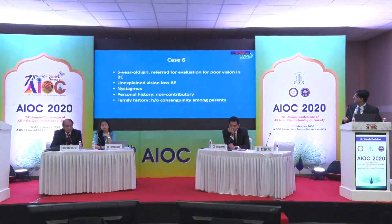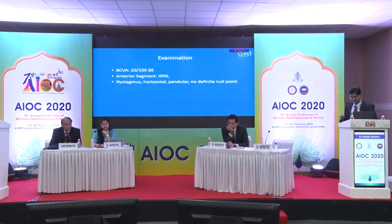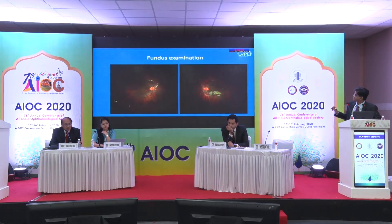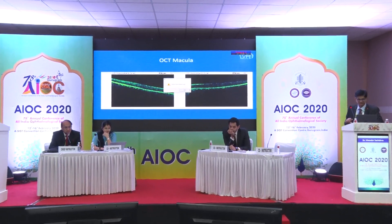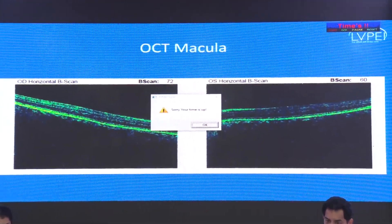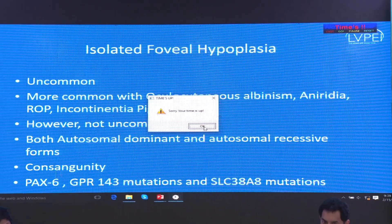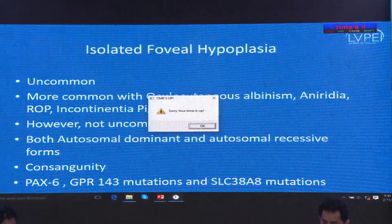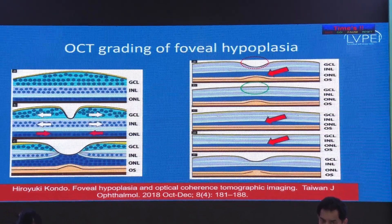Another important case: a five-year-old girl referred for unexplained vision loss with nystagmus. There is no significant family history except consanguinity. Visual acuity is 20/100. The fundus shows no foveal depression — this is a case of isolated foveal hypoplasia without other features of oculocutaneous albinism. We see a remarkable number of these in our part of the world because of consanguinity. OCT changes help distinguish this; it is uncommon and can have both autosomal dominant and autosomal recessive forms, with multiple mutations associated with isolated foveal hypoplasia.